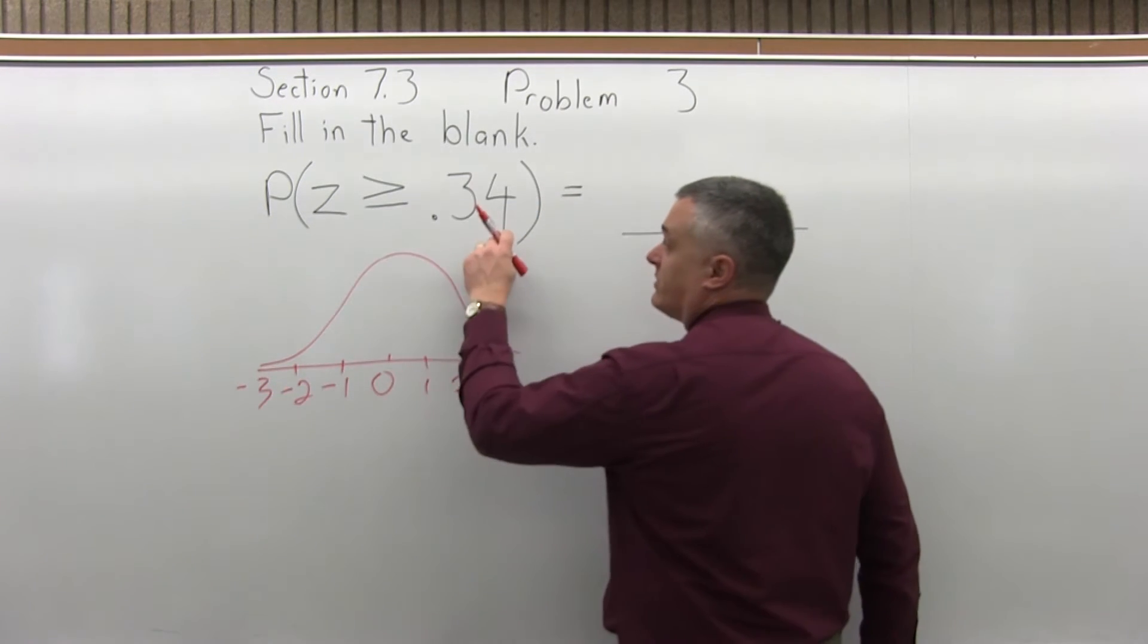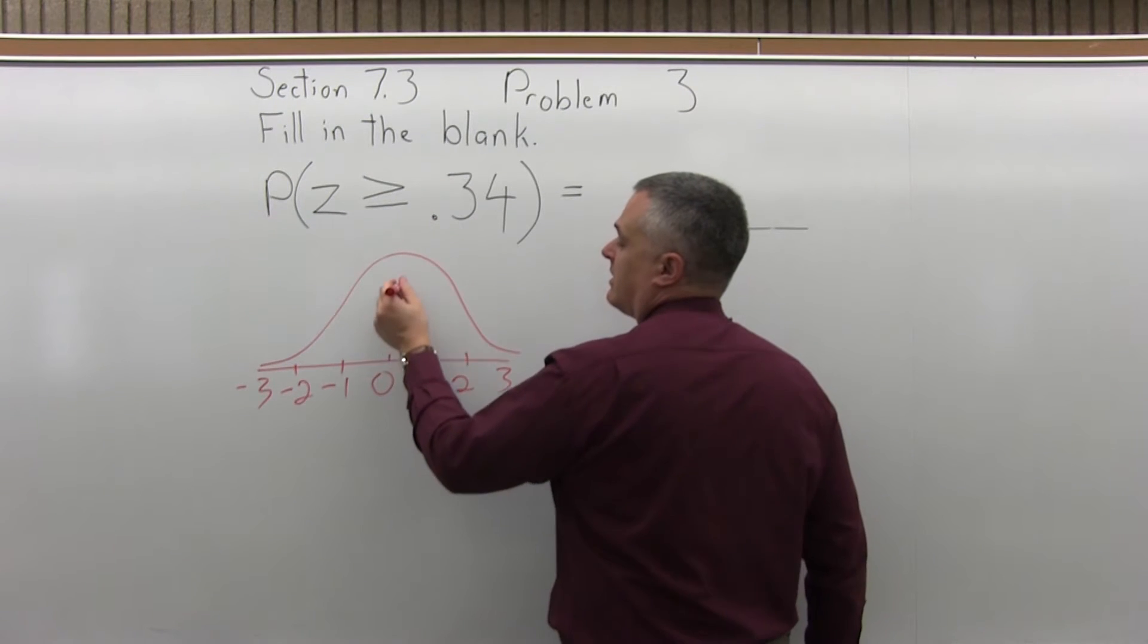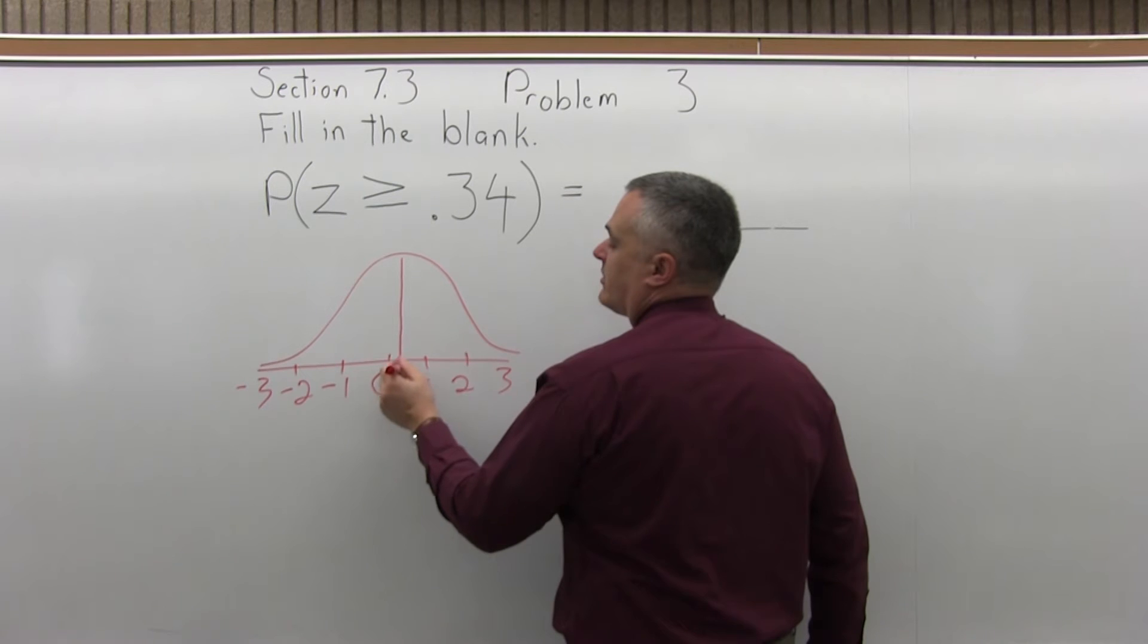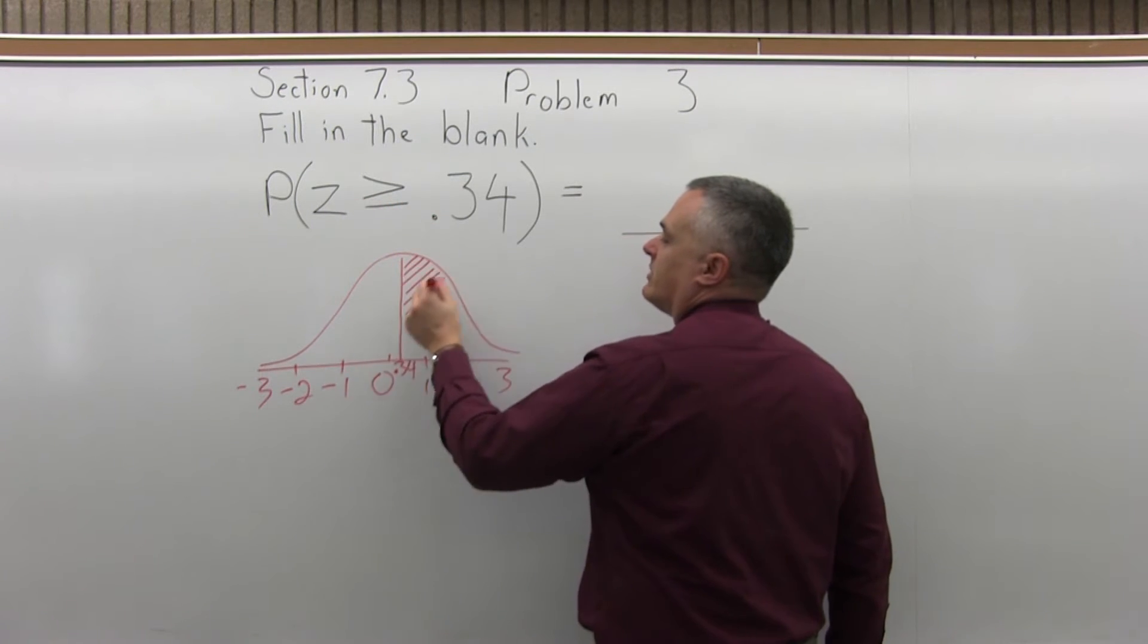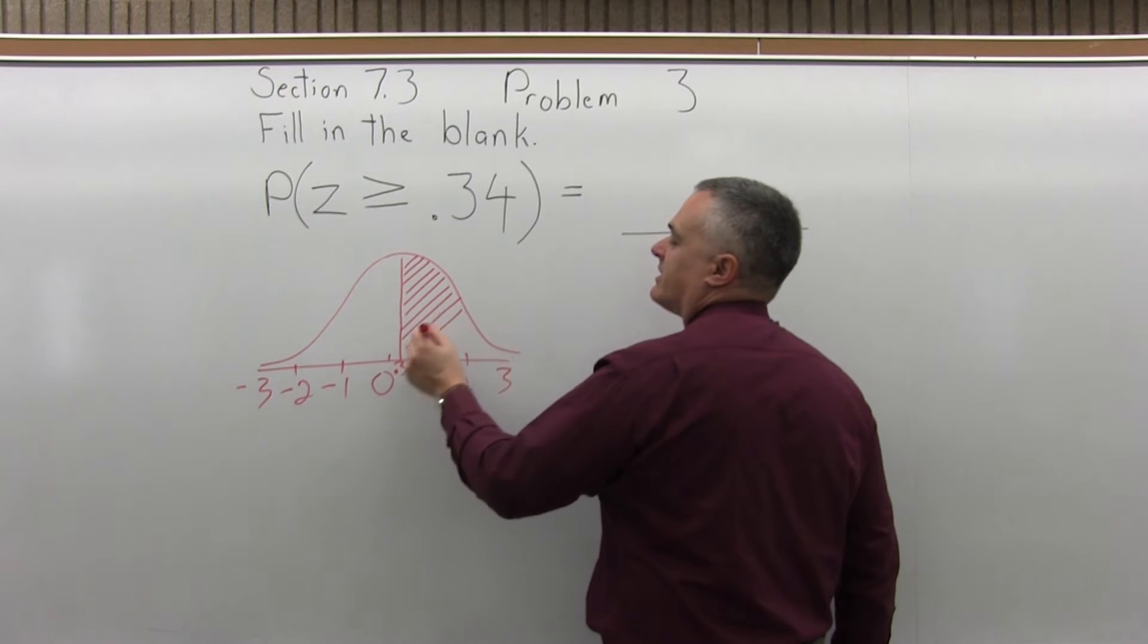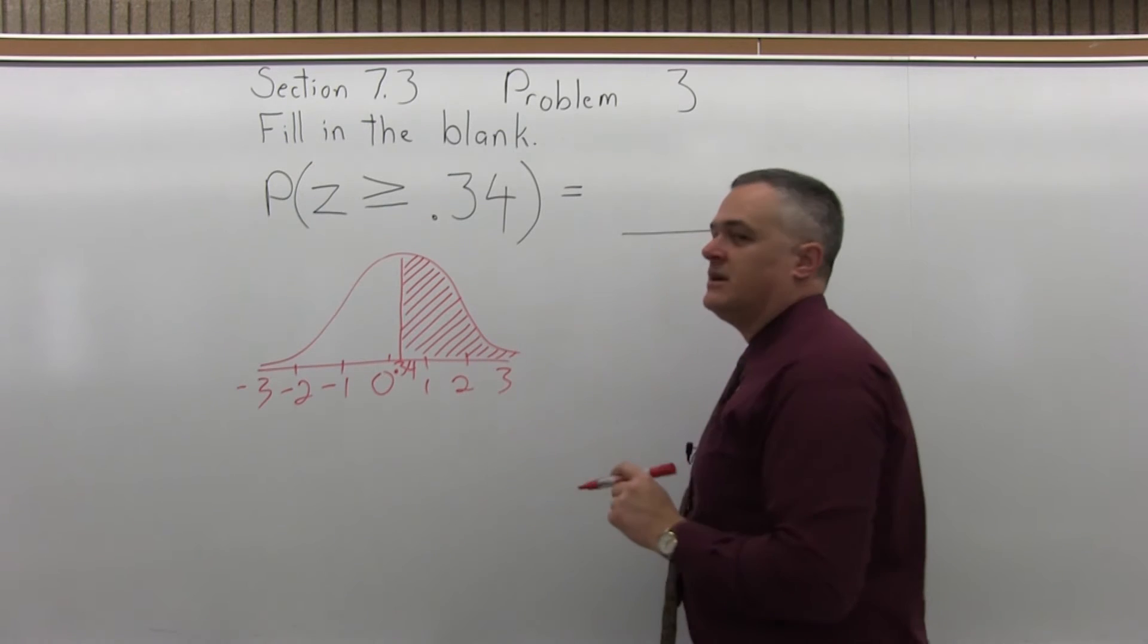And that's what this .34 is, positive .34, so somewhere like that, .34. And we want the probability of being greater than .34. So that's the area that comes to the right of .34 on our graph.